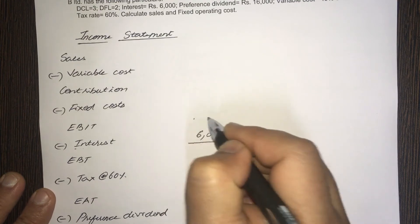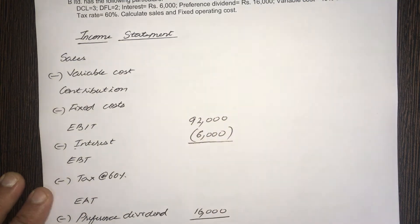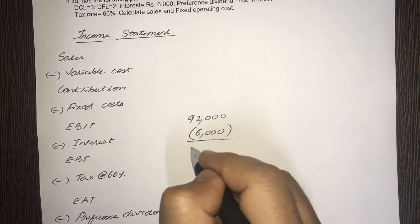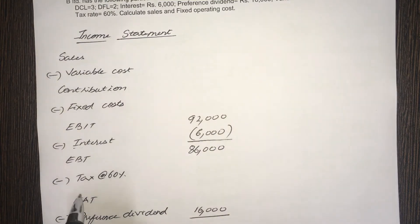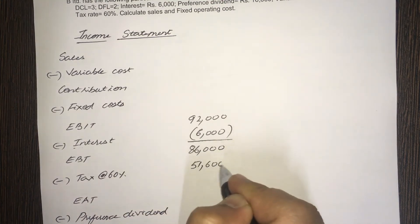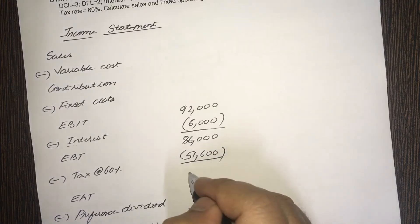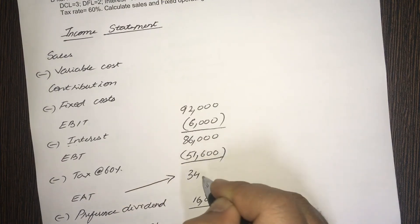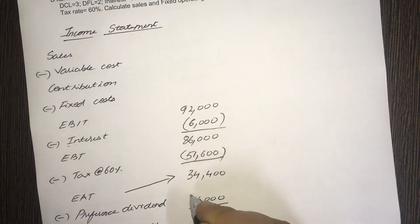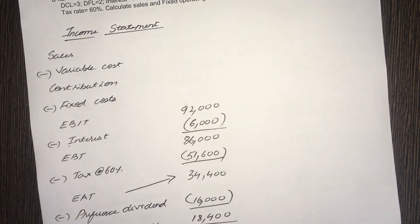EBIT is 92,000 minus interest of 6,000 gives EBT of 86,000. Calculate tax at 60%: that is 51,600. So EAT is 34,400. Preference dividend is already given as 16,000, so equity earnings is 18,400.